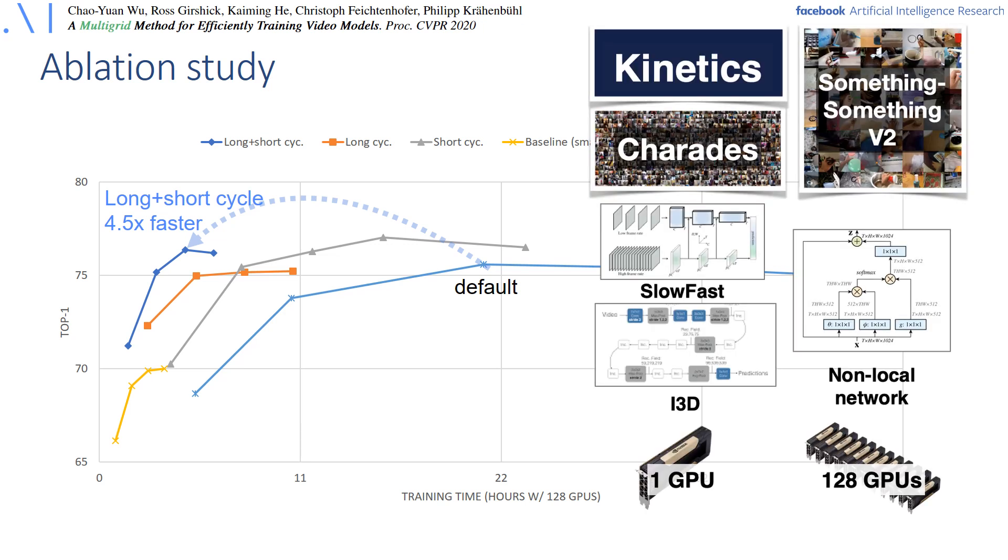Finally, the combination of the two ends up at 4.5x speedup that combines the long and the short cycles. In the paper we explore this for various settings on three datasets, Kinetics, Charades and Something-Something with three models, SlowFast, I3D and Non-local, and various amounts of GPUs used during training from 1 to 128 GPUs.